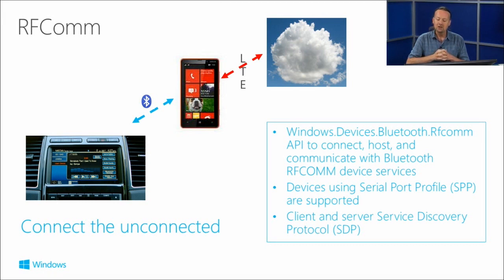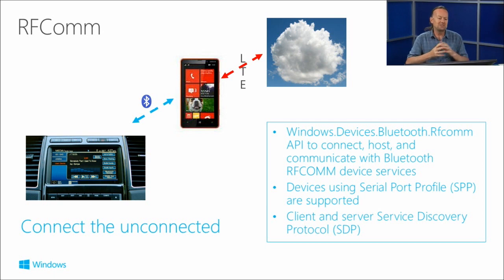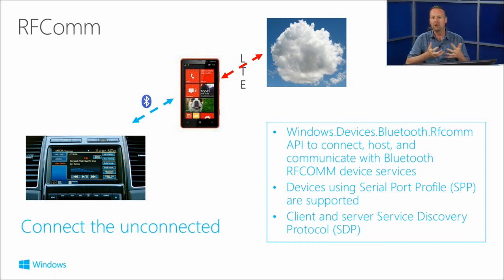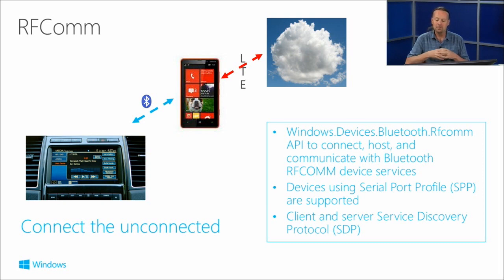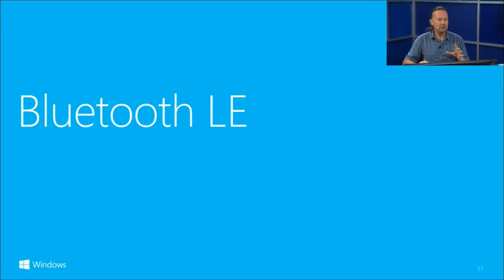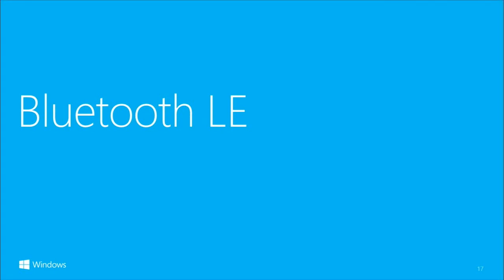With RFComm you've got this client and service discovery, the SDP thing. You can discover services available on a Bluetooth device that understands these things, connect to it, and as the graphic there suggests, you can connect to the unconnected. You could have a Bluetooth system in-car, for example, and use an app running on your phone as a kind of gateway to the cloud and expose interesting new scenarios for communicating with that embedded hardware. But let's move on to the one I really want to talk about: Bluetooth LE.